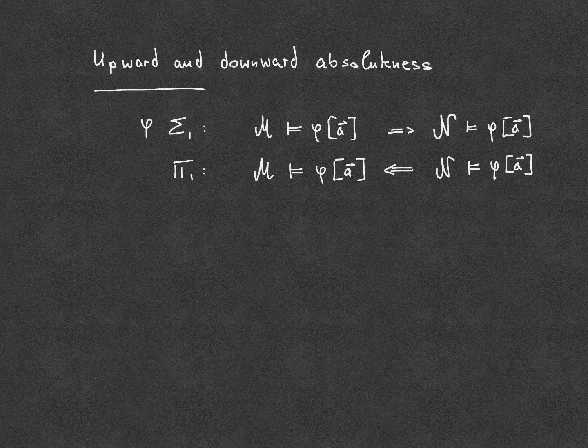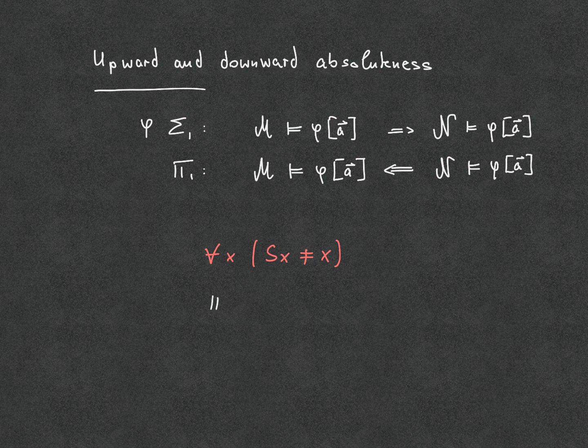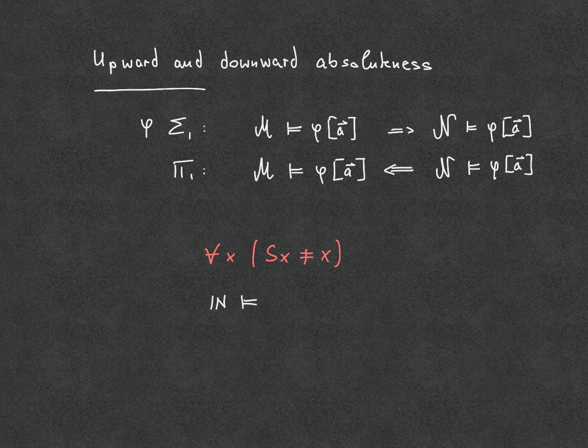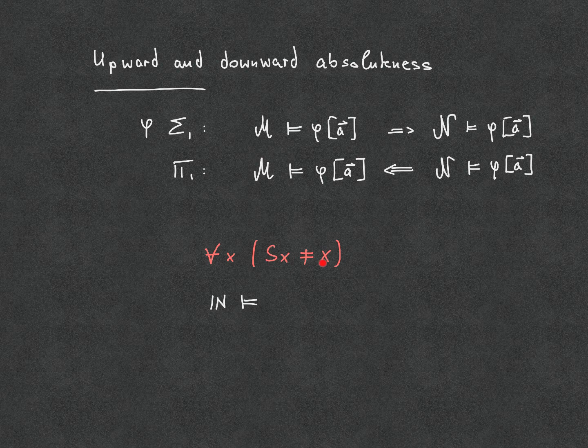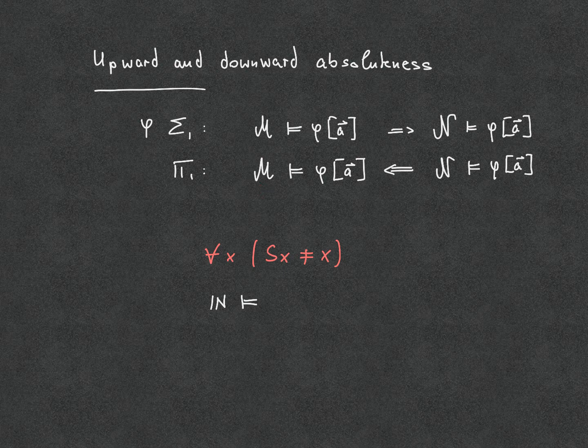The inverse direction is in both cases no longer true. If you take, for example, the pi-1 formula for all x, s x is not equal to x. That is clearly true in n, the standard model. But one can construct a model of PA0 where this sentence here is no longer true. This was one of the exercises from the last lesson. So we see that upward absoluteness does not, no longer applies for pi-1 formulas, for example.